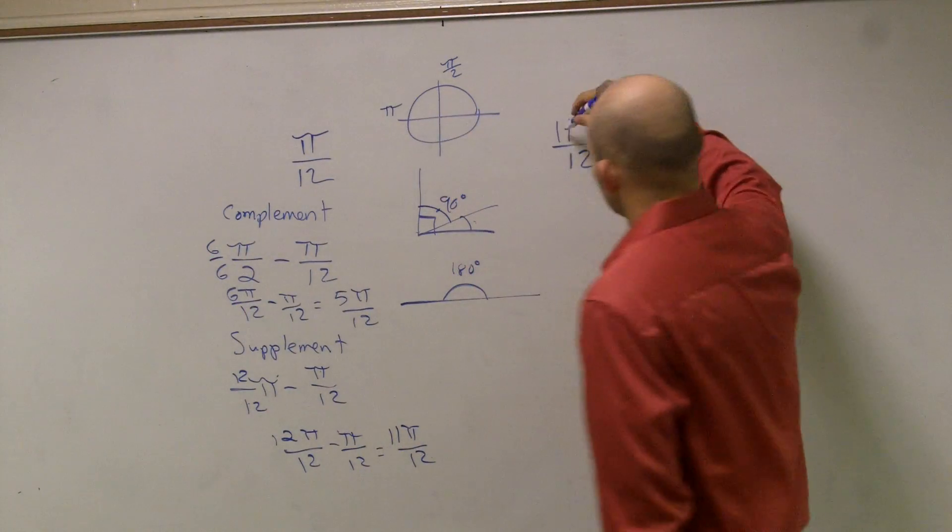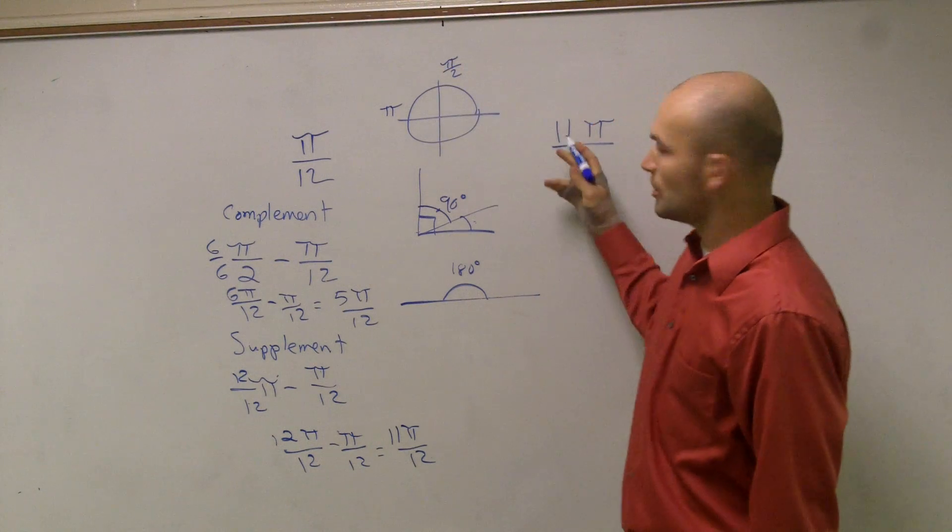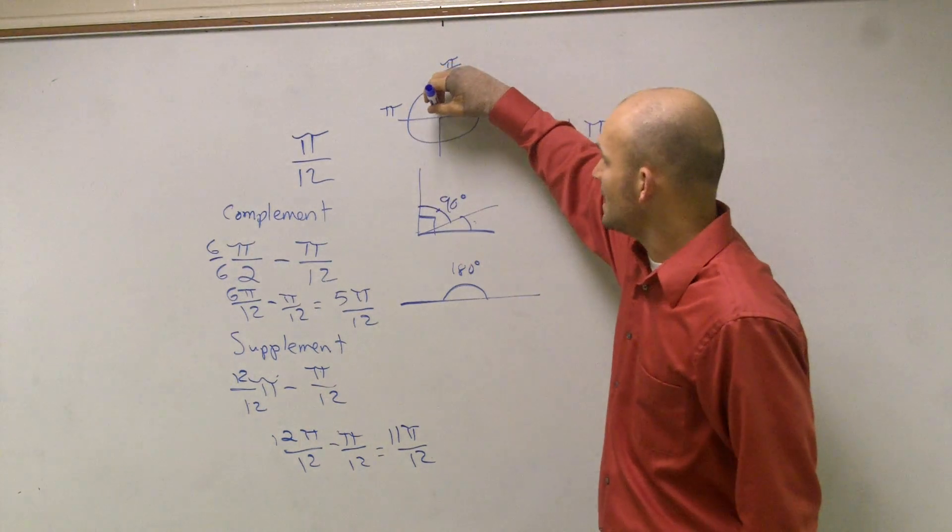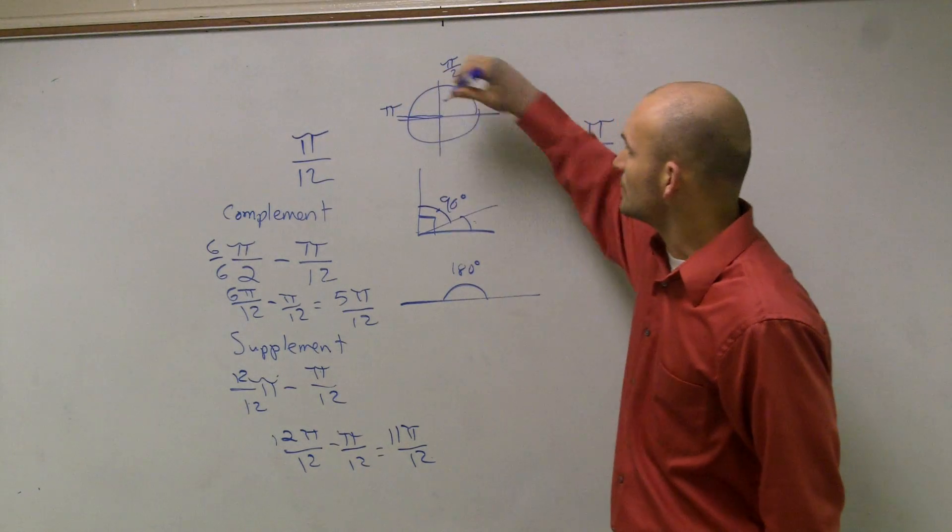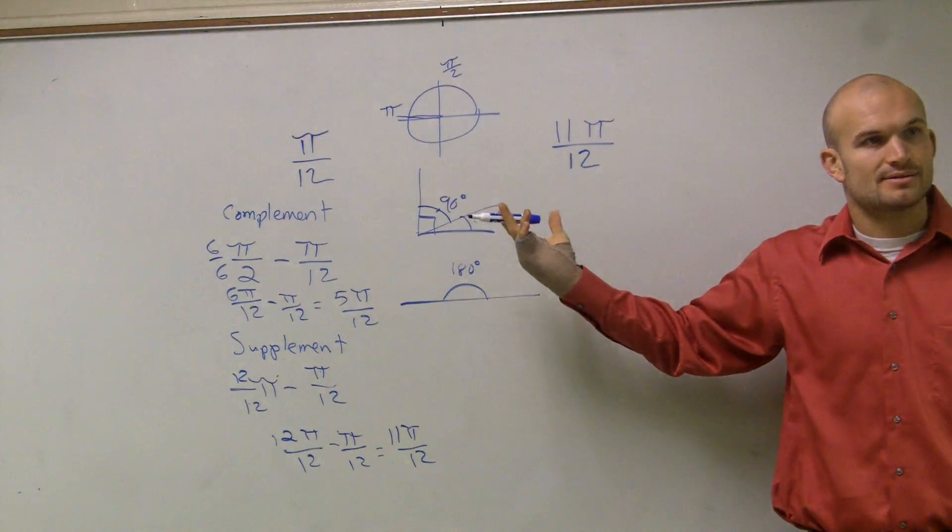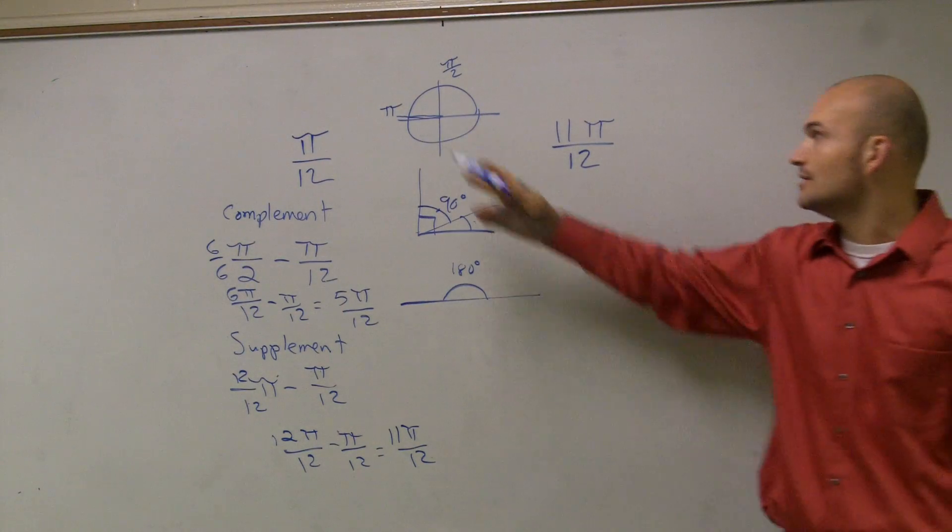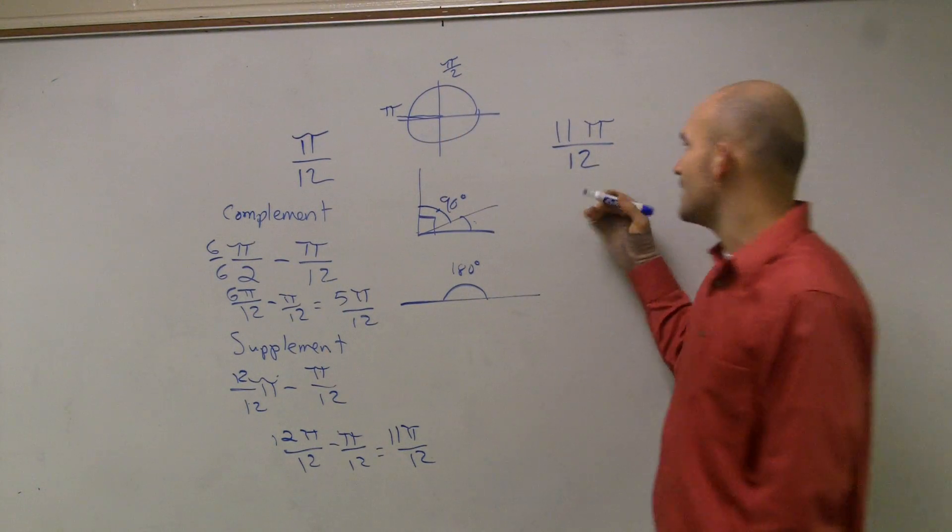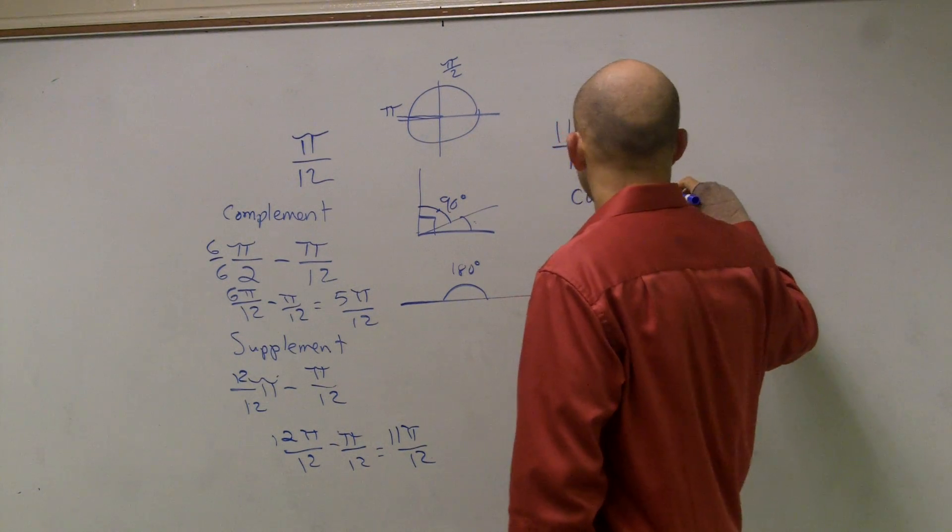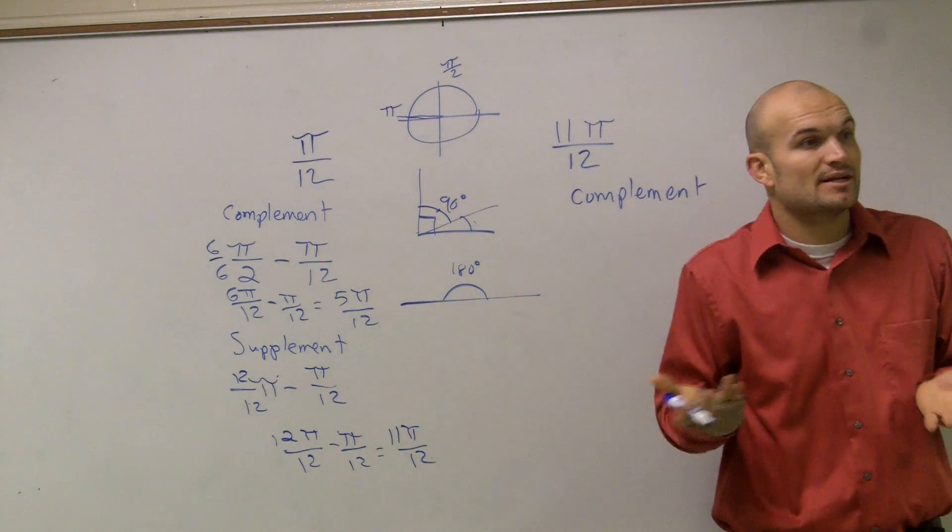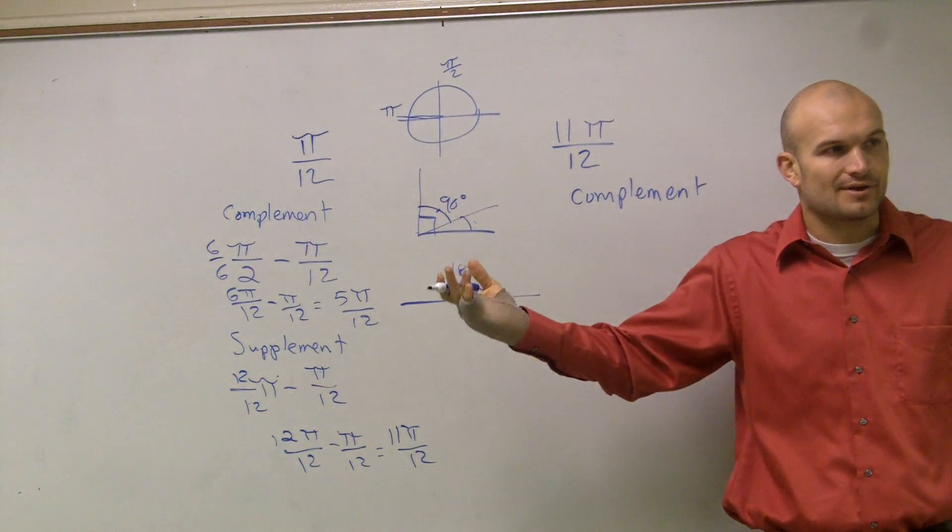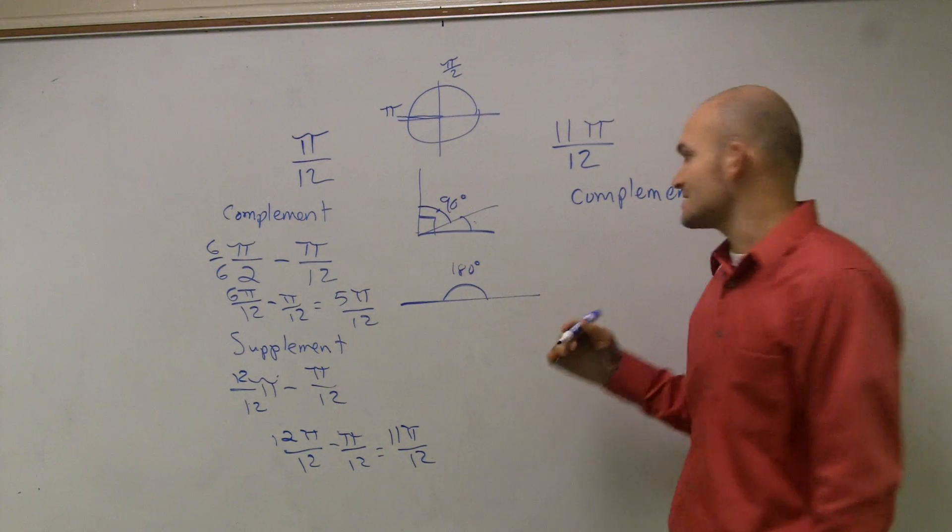Over here, if you guys notice, 11π over 12, that's almost 12 over 12, right? So that's almost a whole π. So that angle is roughly right there. So you can't add anything to 11π over 12 to get it to 90 degrees. Well, another positive angle. So therefore, this does not have a complement. Why not? Because it's already over 90 degrees. Remember, the complement is what two angles add up to 90 degrees, right? So if you have an angle that's greater than 90 degrees, it doesn't have a positive complement.